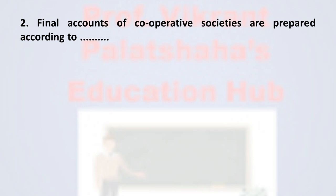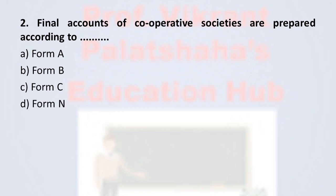Question number 2: Final Accounts of Cooperative Societies are prepared according to ___. Option A: Form A. Option B: Form B. Option C: Form C. Option D: Form N. The correct option is option D, Form N. Final Accounts of Cooperative Societies are prepared according to Form N. Therefore, the correct option is option D.